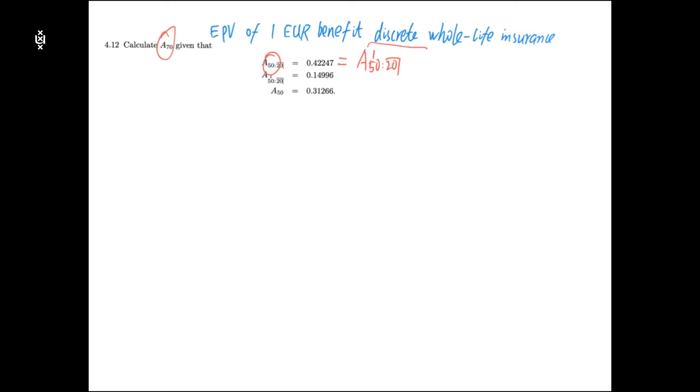If this person can survive 20 years then they get one euro benefit, denoted with additional notation at a different location. This term is the term insurance and this is the expected present value for whole life insurance for age 50.